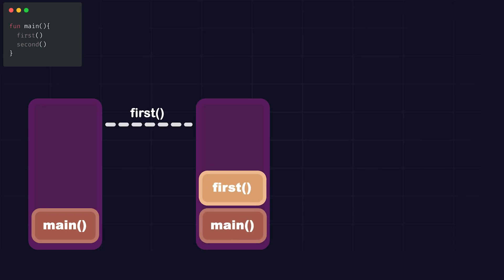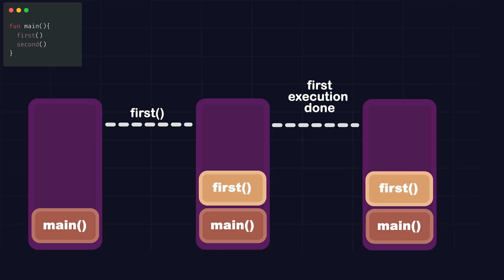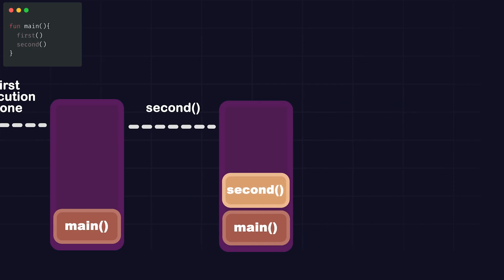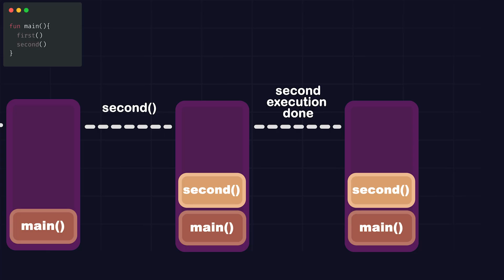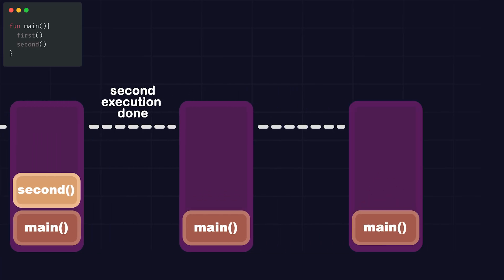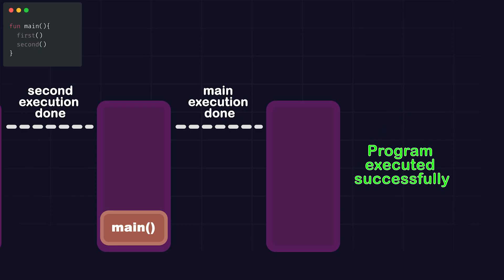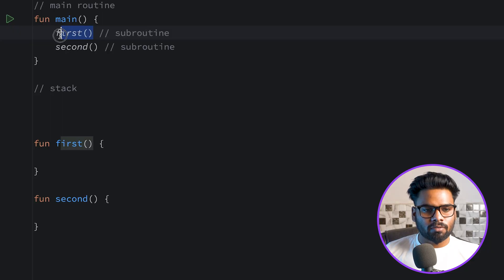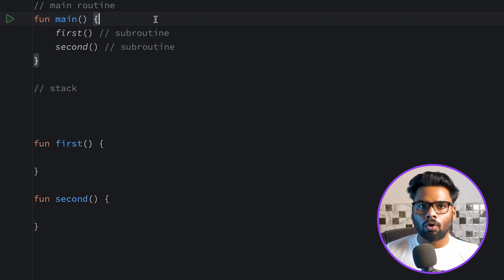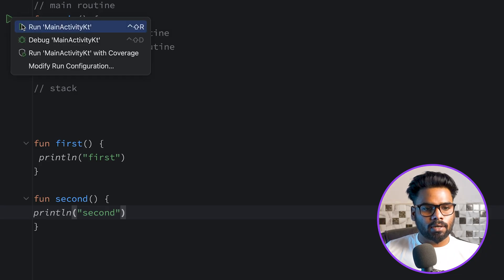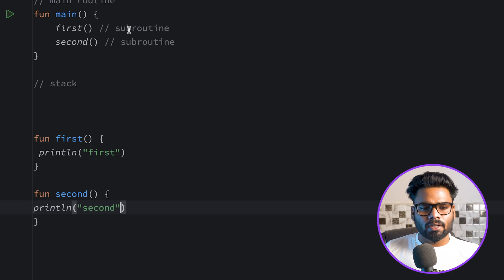Next it will insert the first function call, and once execution of the first function is done, it will simply remove or pop it from the programming call stack. After that it inserts the second function call, and once the second function is done it removes it. Finally when main is removed the stack is empty and execution is complete. This is how a routine works — once the first function finishes, only then does it trigger the second function. This is what we call blocking invocation. I'm using println for first and println for second — when you execute it you will see first then second. Subroutines invoke a blocking call.